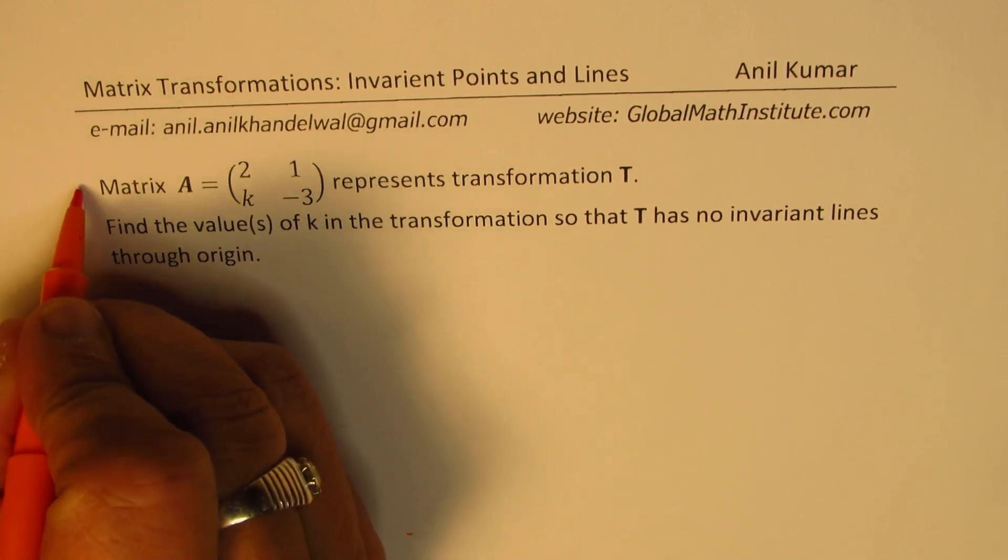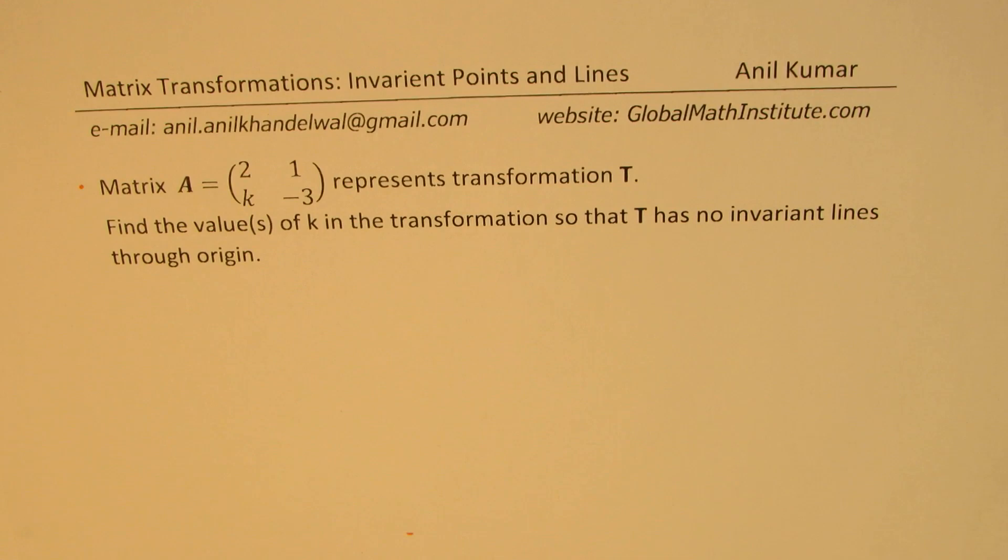The question here is: matrix A equals 2, 1, k, minus 3 represents transformation T. Find the values of k in the transformation so that T has no invariant lines through origin. You can pause the video, answer this question, and then look into my suggestions.